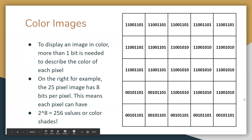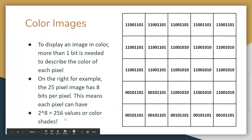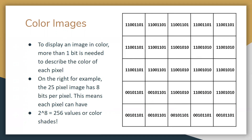There are 25 pixels here. We are going to assign each pixel eight bits, so that means we have 2 to the 8th, which is 256 values or different color shades. You can make these color shades the rainbow colors we see, or from grayscale — from black to white — 256 different shades.